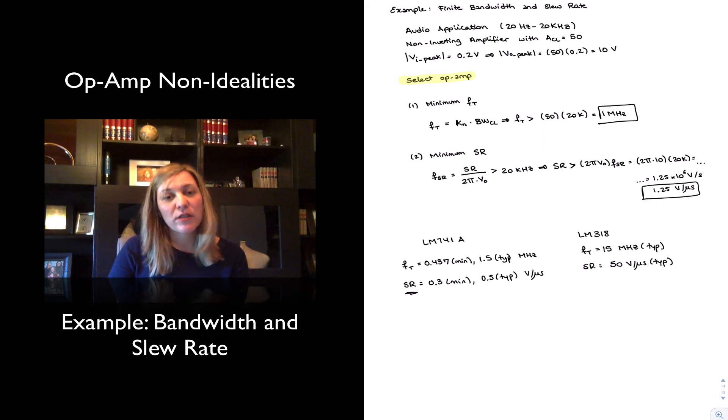And again, we only have typical values, so if this happens to be something really critical, we might do different things. We might select a different op-amp or a different version of the same family that perhaps gives us minimum values, or worst-case values. Otherwise, we could contact the company.